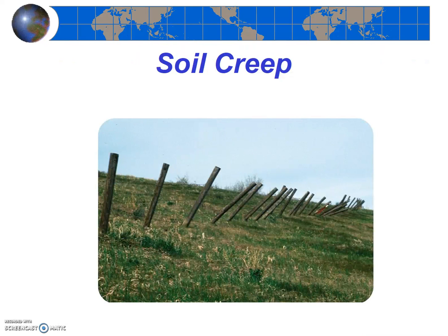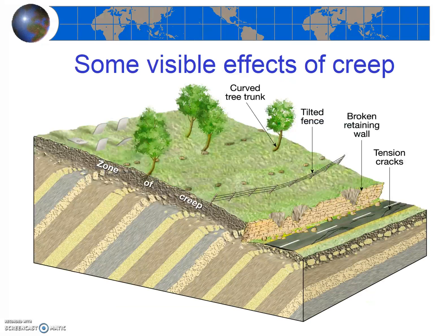At the other end of the spectrum from mud and debris flows is soil creep — a very slow and gradual movement that occurs so slowly it is impossible to even see. Rather, it is detected only by noting changes that appear over years or decades. Indicators of soil creep include leaning fences, broken or bulging retaining walls, curved tree trunks, and so on.